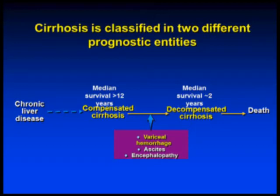Once the patient develops one of these complications, the patient is defined as decompensated. The compensated patient has a median survival of about 12 years as long as they remain compensated, while once they develop decompensation, their median survival is about two years. If these are patients going to be referred for transplant, this is the time when they decompensate, because usually the wait time is about two years.